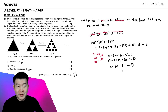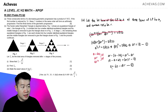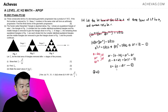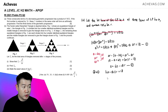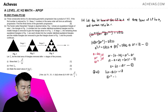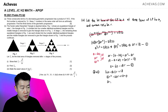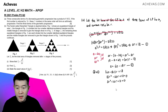Substituting equation two into equation one, replacing A: (60 minus 18R) times R equals 18, giving 60R minus 18R squared equals 18. Rearranging: 18R squared minus 60R plus 18 equals zero. Dividing by 6: 3R squared minus 10R plus 3 equals zero.